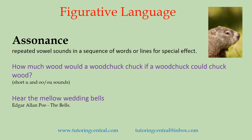Assonance, on the other hand, involves repeated vowel sounds in a sequence of words or lines for special effect. 'How much wood would a woodchuck chuck if a woodchuck could chuck wood?' — there are lots of short U and OU sounds in this one. Another example from Edgar Allan Poe's The Bells: 'Hear the mellow wedding bells' — you have the repetition of the short E sound. Assonance creates a musical quality through those repeated vowel sounds.